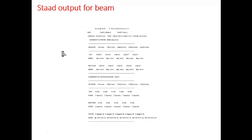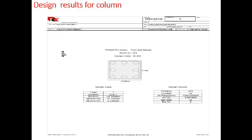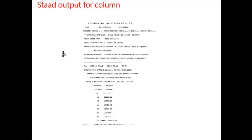This is the STAAD output for the beam, showing the sectional area, top reinforcement, bottom reinforcement, provision of spacing, and shear reinforcement. Design results for the column, showing the placement of reinforcement, the breadth and width of column, bar size, bar diameter, and number of bars required. This is the STAAD output for the column. At the end of the STAAD analysis, you can get the total volume of concrete and total volume of steel used in the entire generation of the model.